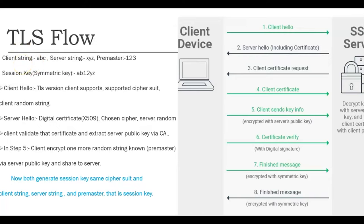The client initiates the discussion first by sending a Hello message. Along with Hello, it sends what TLS versions it supports — for example, TLS 1.1, 1.2, 1.3 — listing them all for the server. It will also share the supported cipher suites with the server, and the client random string, which is ABC.